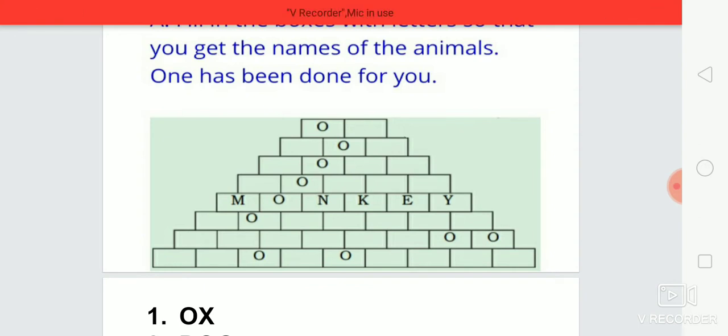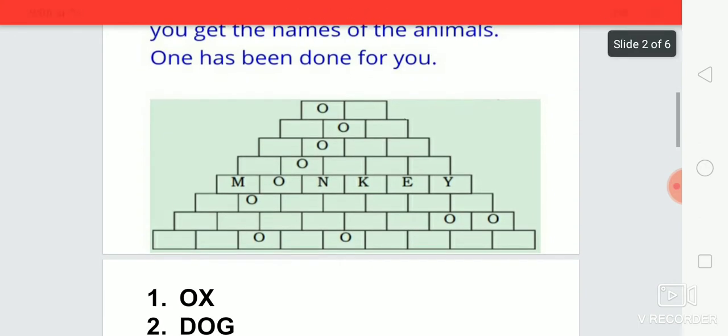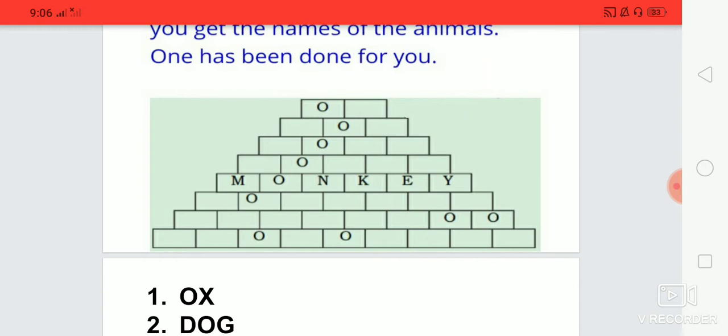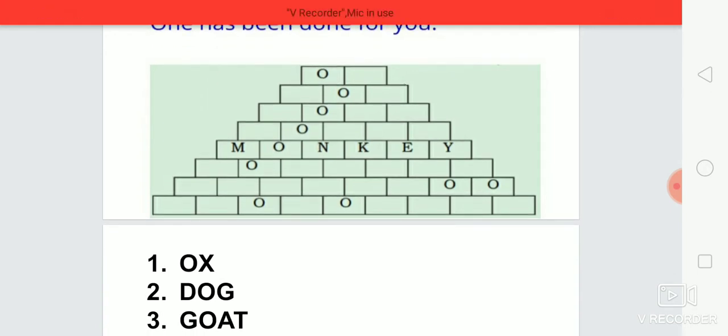We can write dog, D-O-G, dog. Write down in the first box of the second row, write D-O, they wrote, after O you write G, D-O-G, dog.